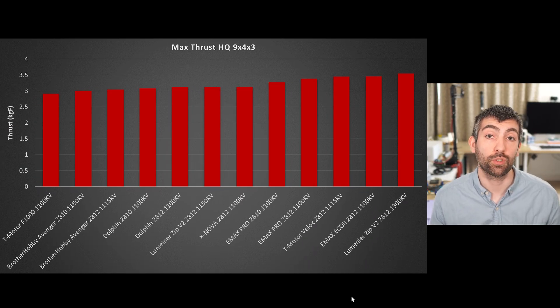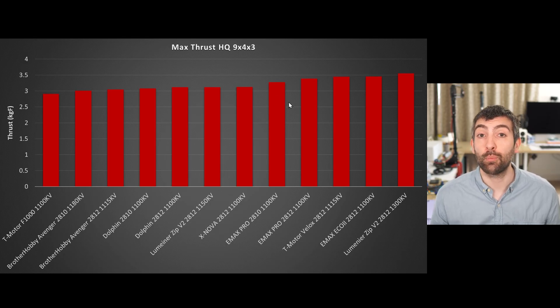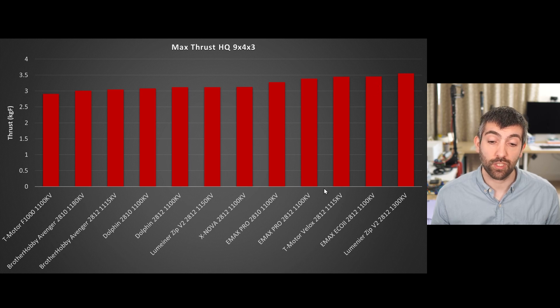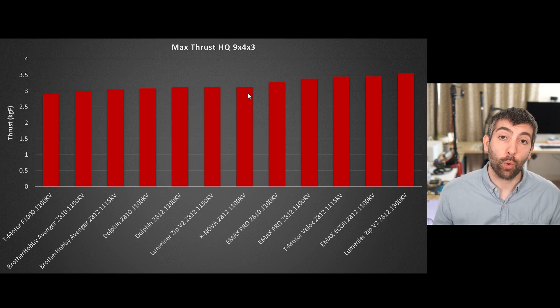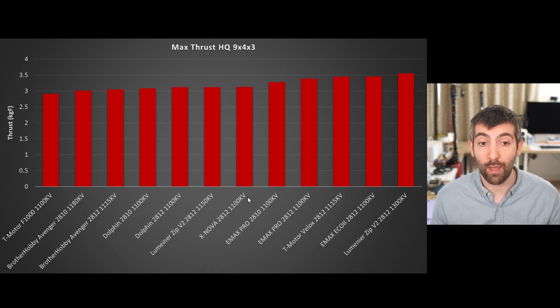If we look at the maximum thrust these motors were able to produce, the broad brushstrokes are that the smaller 2810 size motors come towards the lower end of the ratings and the larger 2812 motors are able to produce more thrust as we would expect. The Lumineer Zip V2 1300 kV, that higher kV allows it to edge ahead in terms of maximum thrust and power, although it is doing that with a bit of a loss of efficiency as we'll see later. The Emax Eco2 2812 is doing really well in terms of maximum thrust along with the Velox 2812. The Xnova 2812 is actually doing quite poorly in terms of maximum thrust and I think this is due to the lower kV that it actually has compared to its rating. It would be doing a lot better if it had a true kV closer to its 1100 kV rating, but it has under 1000 kV when I measured it and that's obviously going to limit the maximum thrust.